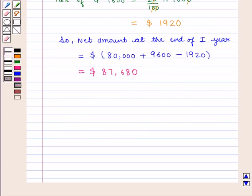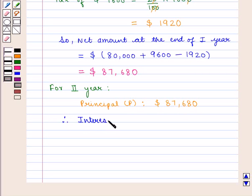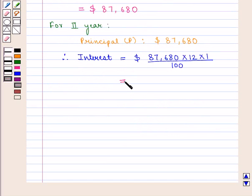So now, for the second year, principal will be $87,680. Therefore, interest will be equal to $87,680 times 12 times 1 divided by 100, which equals $10,521.6.